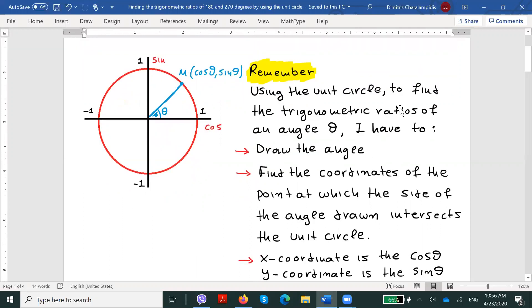The coordinates of this point will basically show us the cosine and the sine of the original angle theta. More precisely, the x coordinate will be equal to the cosine of angle theta, while the y coordinate will be the sine of angle theta.